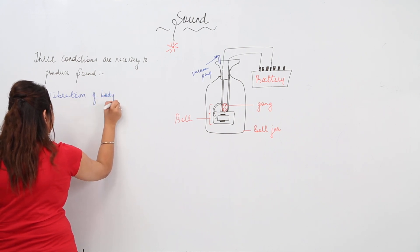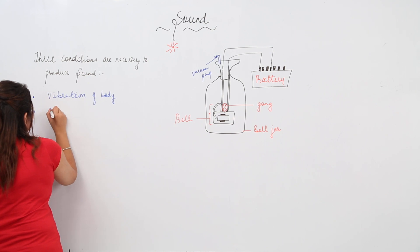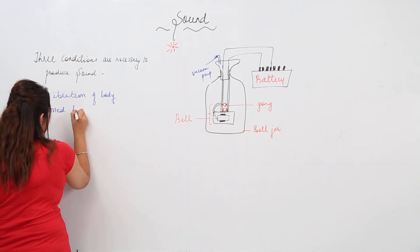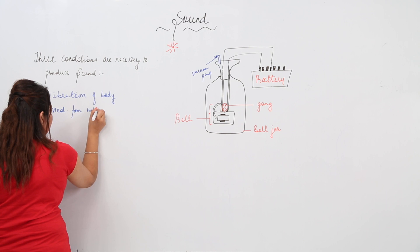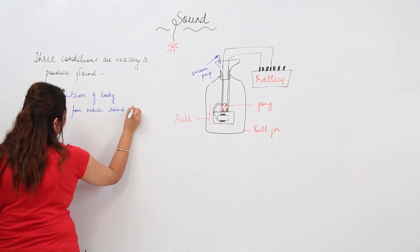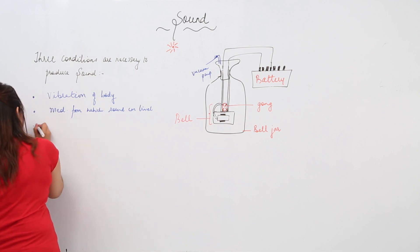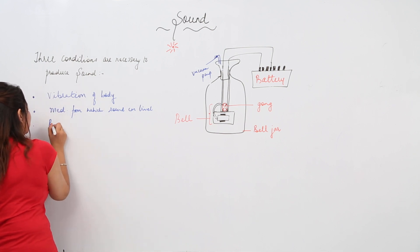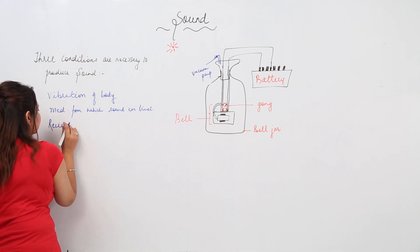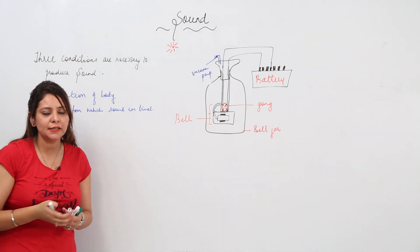The second condition is that there should be a medium from which sound can propagate — sound can travel through it. The third condition is that there should be a receiver who can actually receive and hear the sound.